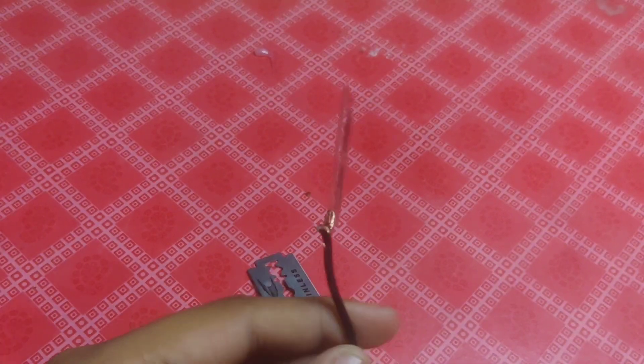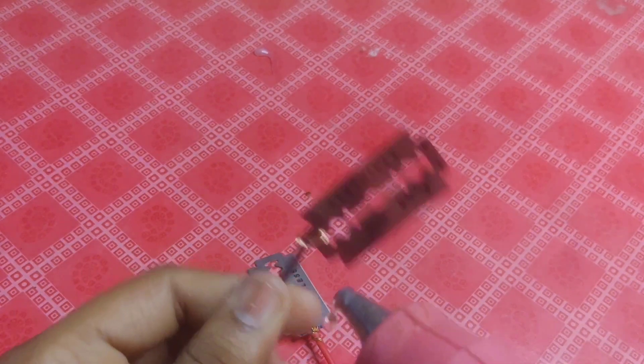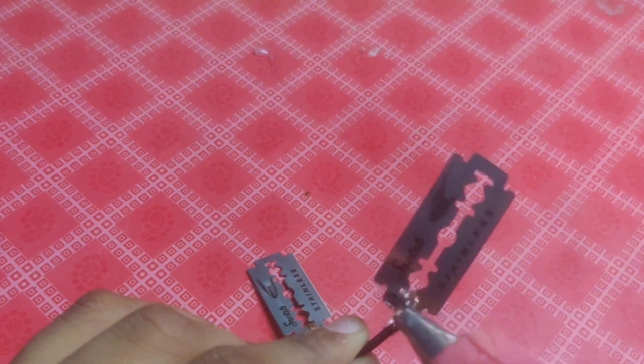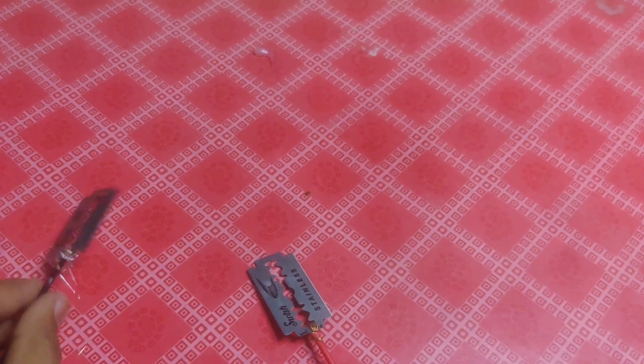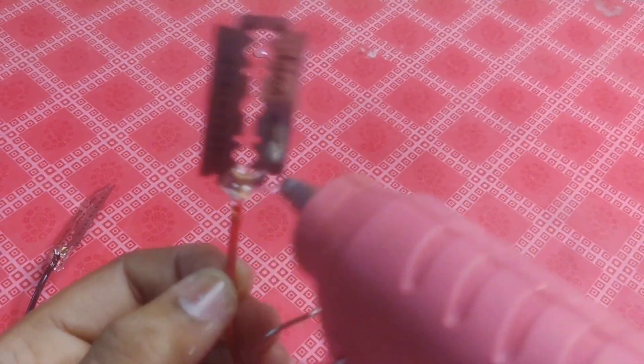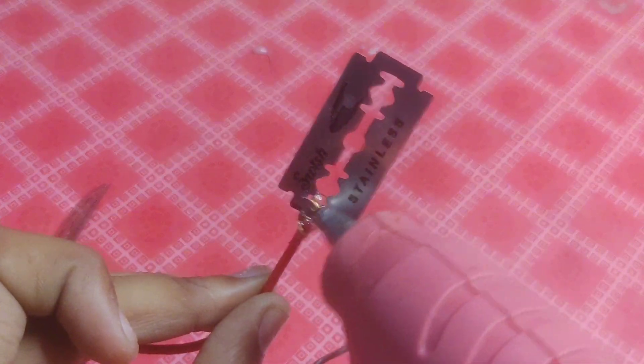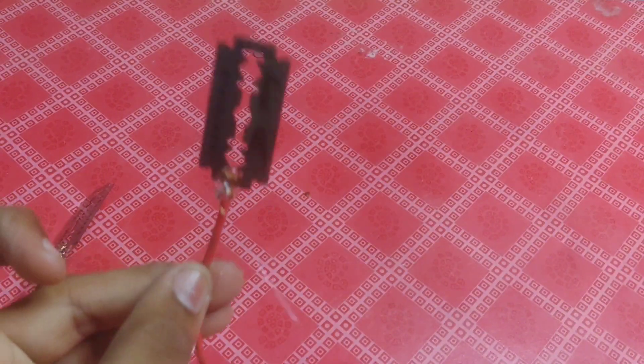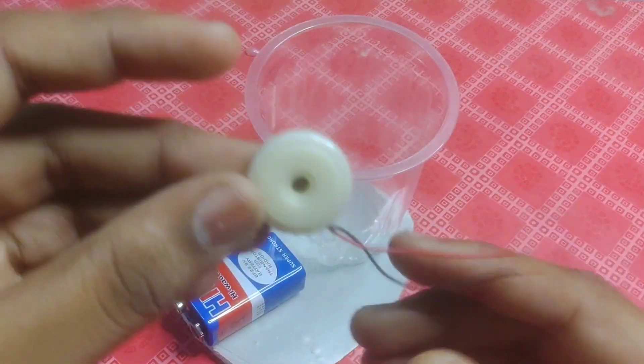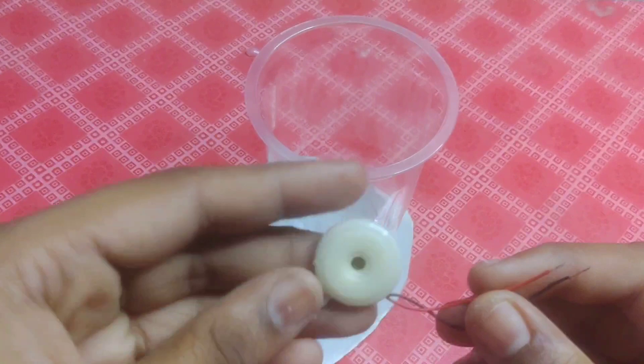I'm putting glue on the pieces and assembling the components. Now we have to put the glue on the side of the base like this.